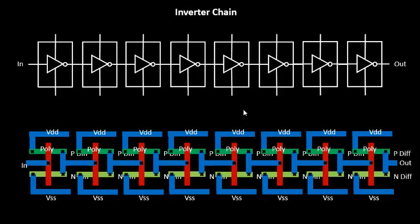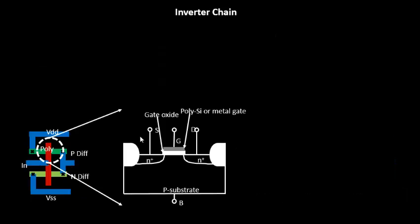We'll take one PMOS transistor from the layout and look at its cross-sectional view. When you cut the transistor in this fashion and view it from the side, you see the polysilicon gate, the oxide beneath it, and the diffusion areas — one being the source and one the drain.